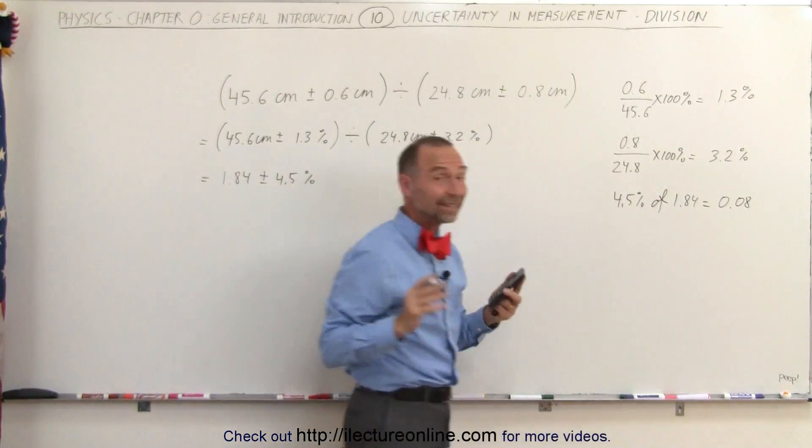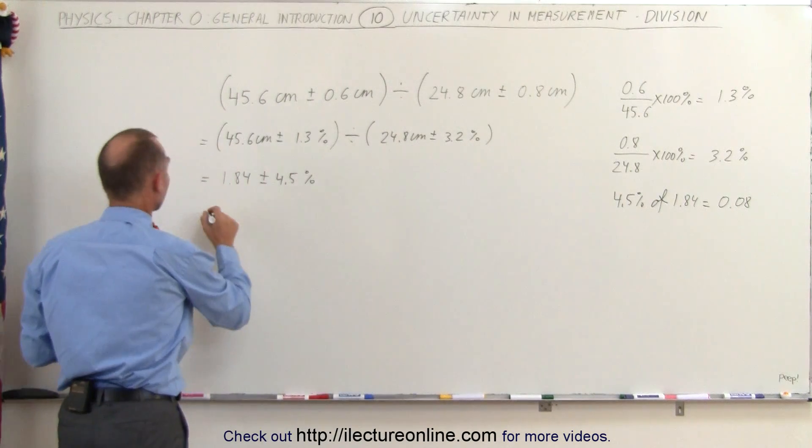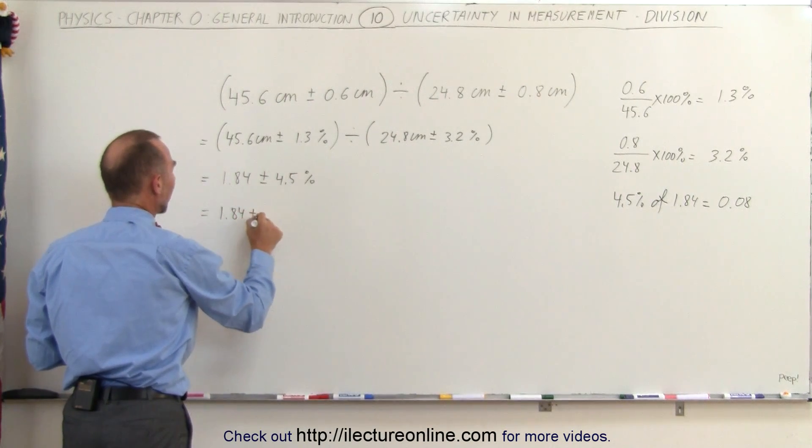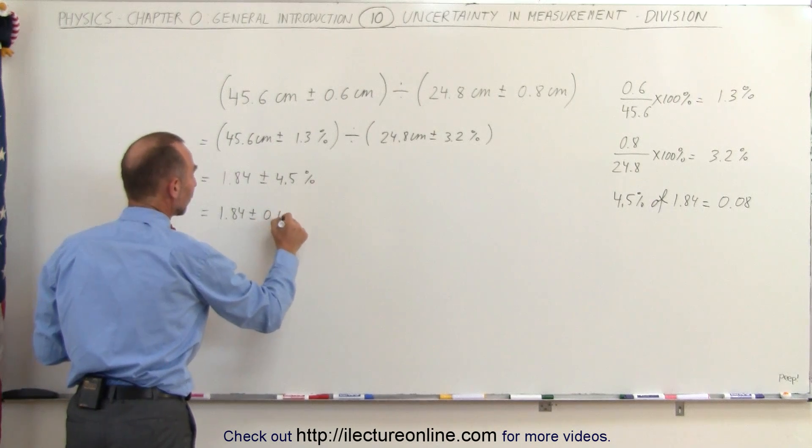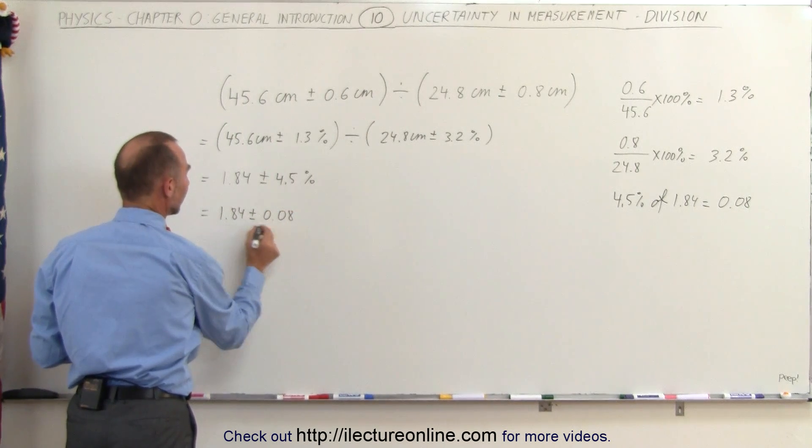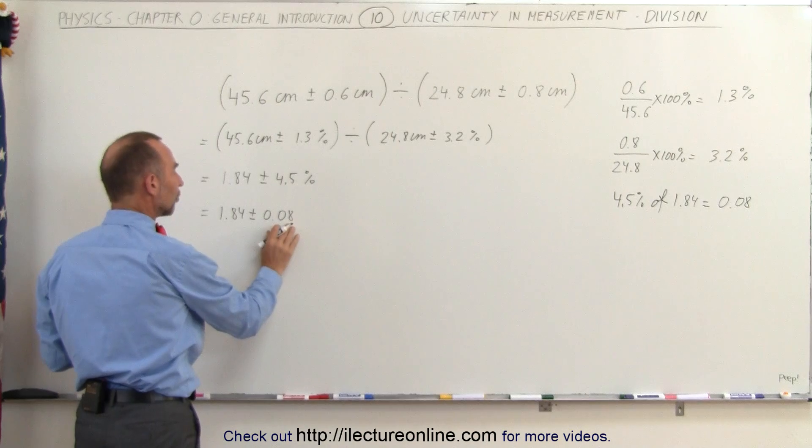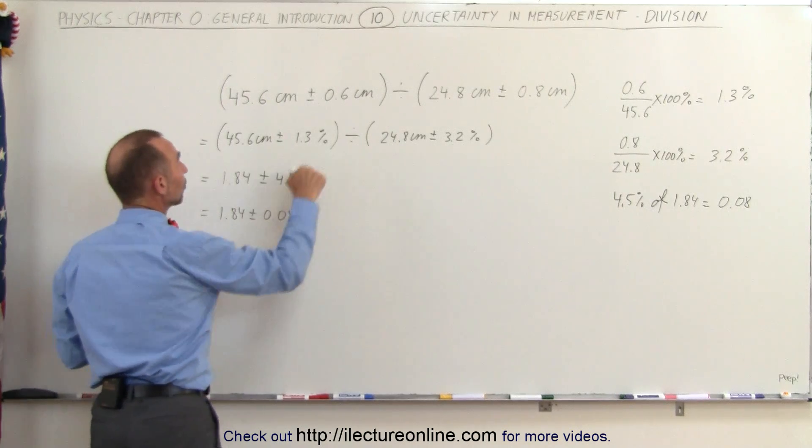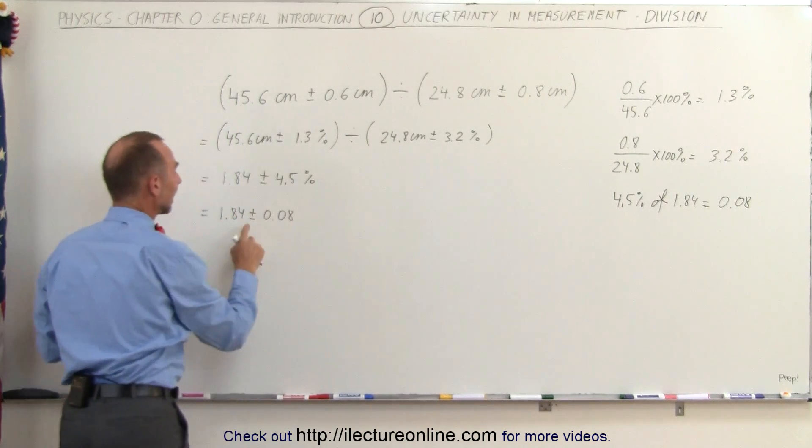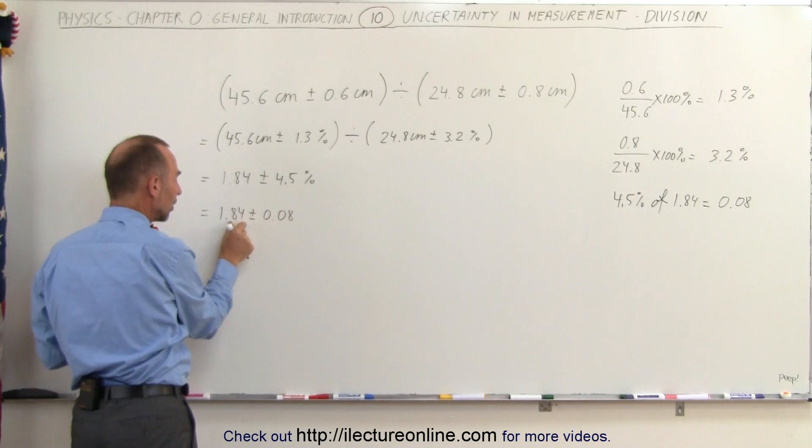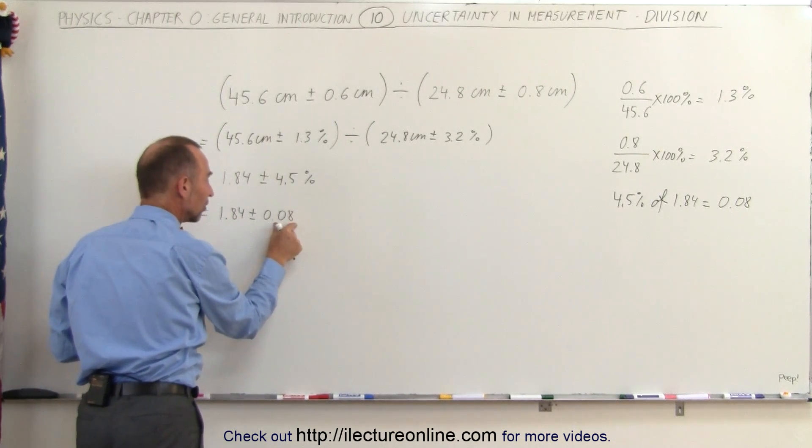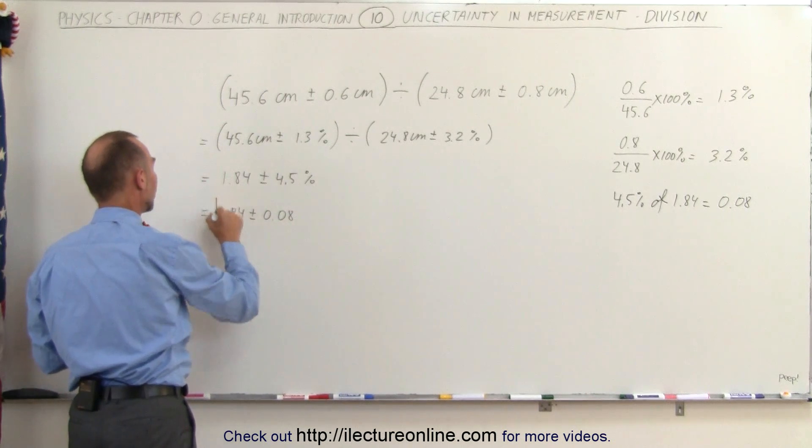So now our final answer then becomes the following. This is equal to 1.84 plus or minus 0.08. Notice that the uncertainty has one significant figure, just like the uncertainty had here. And there's two decimal places here and there's two decimal places in the uncertainty, which is the correct way of writing it.